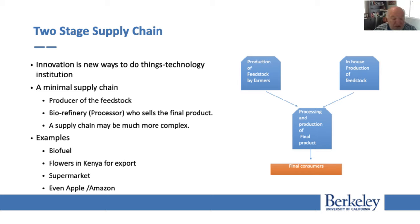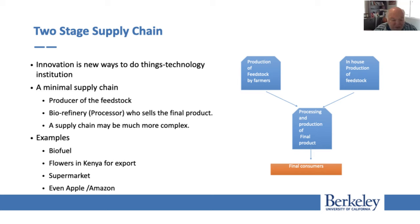An example is biofuel: farmers use coal or sugarcane, companies buy it, refine it, and produce biofuel to sell. With regular oil, you have oil wells, then a refinery, then you sell to the final consumer. In many cases you have new, very creative supply chains — for example, a Danish company called Panuk developed a supply chain of flowers: grown in Kenya, processed in Kenya, shipped to Europe, and distributed in Europe. Again, the feedstock is the flowers, and the processing is shipping and selling.